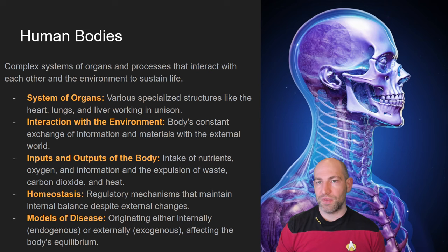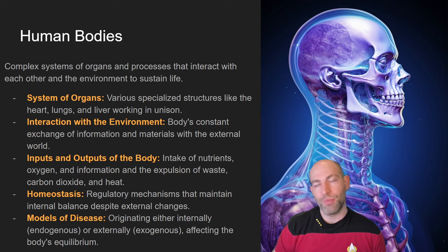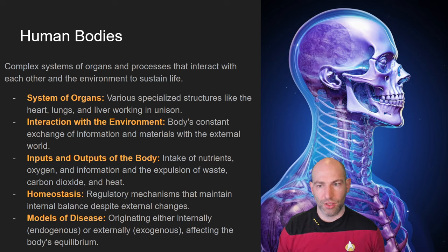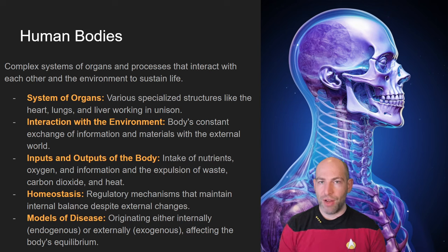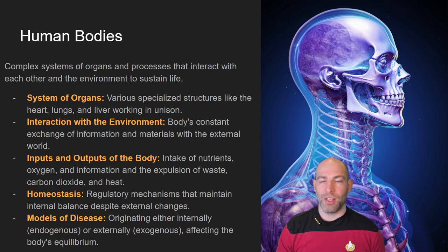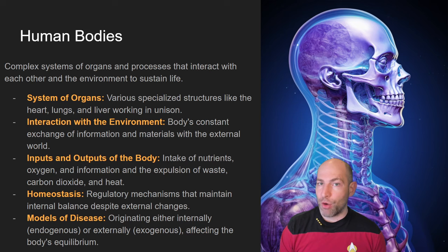The human body is a system or a network. You are composed of a system of organs — your circulatory system, digestive system, skin system, musculoskeletal system, and so on. Your boundaries are very clear: your skin is your primary boundary. That boundary interacts with other systems, including people, the physical environment, as well as the microscopic bacterial environment. There are inputs and outputs to your body — you take in nutrients, water, and food, and you have outputs such as the expulsion of waste, carbon dioxide, and excess heat.